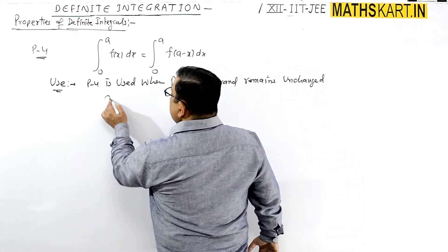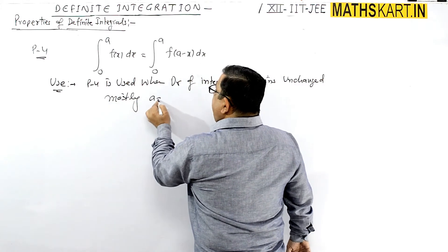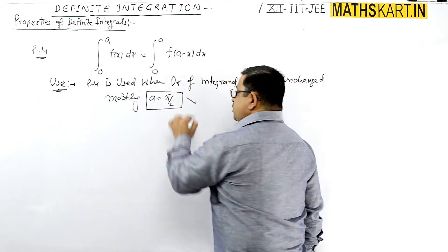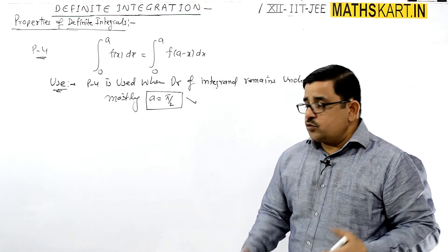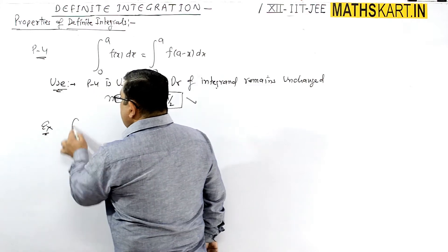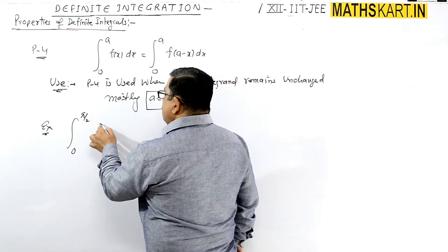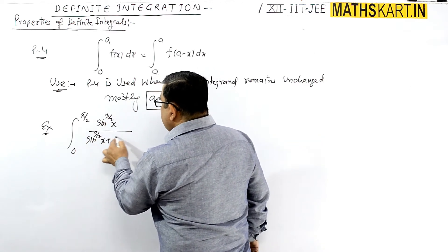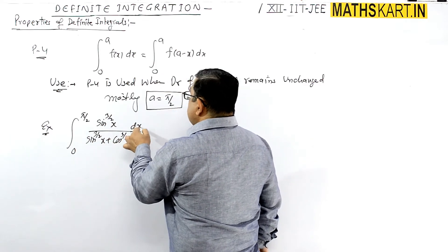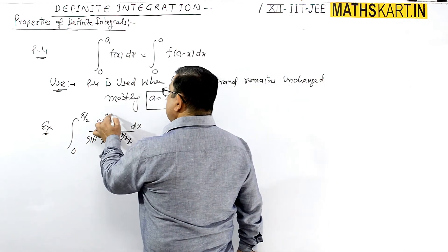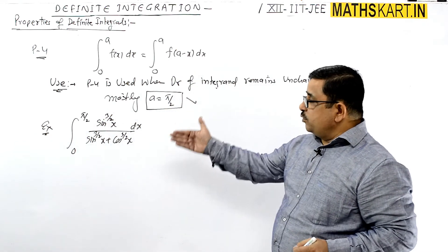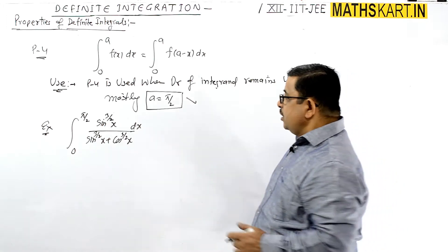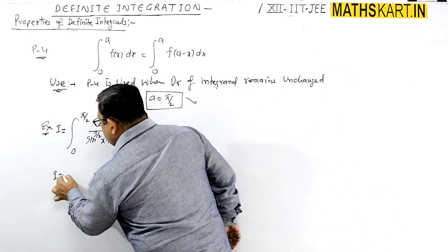Let us take an example: integrate from 0 to π/2 the function sin^(3/2)(x) divided by [sin^(3/2)(x) + cos^(3/2)(x)] dx. Suppose you have to integrate this — sin to the power 3/2. We call the integral I and use Property 4, which means replacing x by (a - x), i.e., x → (π/2 - x) in the function.